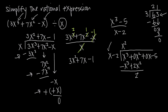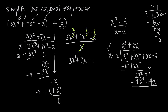How many times does x go into 2x squared? We need a positive 2 and an extra x, so that's 2x. We multiply 2x through the entire divisor x minus 2: 2x times x is 2x squared, and 2x times negative 2 is negative 4x. We subtract, changing the signs: 2x squared becomes negative, and negative 4x becomes positive 4x. Adding: 2x squared minus 2x squared is 0. We bring down 0x and add 4x, giving us 4x. Then we bring down the negative 5.